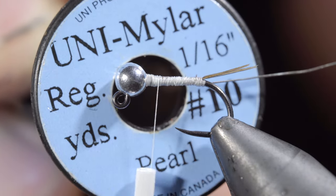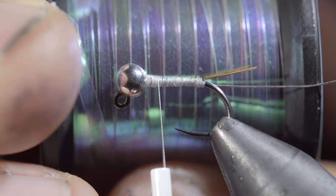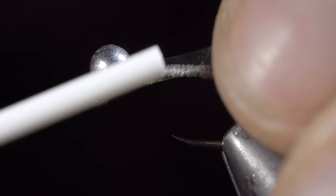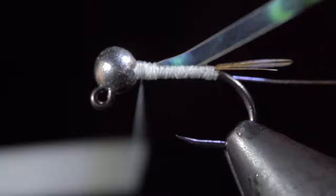We'll grab a piece of mylar, securing it to the hook shank and wrapping back once again to the tail of our fly.